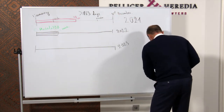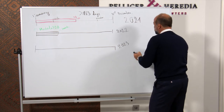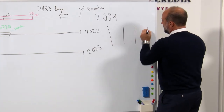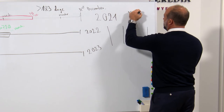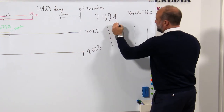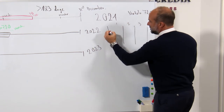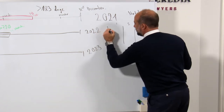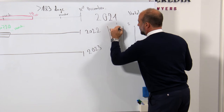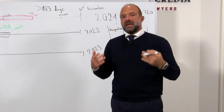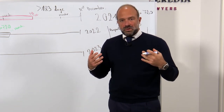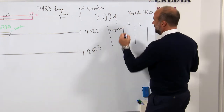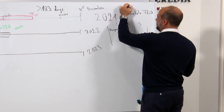Let me explain Modelo 720 specifically, because it has some specifications — it has three pillars. One of the pillars is that you need to show and inform which properties you own outside Spain where the value or the acquisition price when you became owner is over 50,000 euros. Each pillar needs to be more than 50,000 euros.